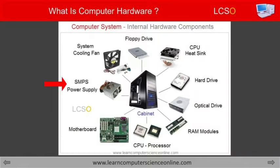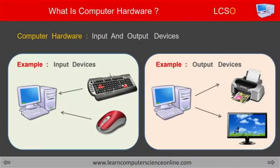Some of the most prominent hardware components placed inside the computer case include the motherboard, power supply unit, memory hard disks, microprocessor, RAM modules, and other such components. The peripheral devices are the second type of hardware components, which are connected externally to the computer.